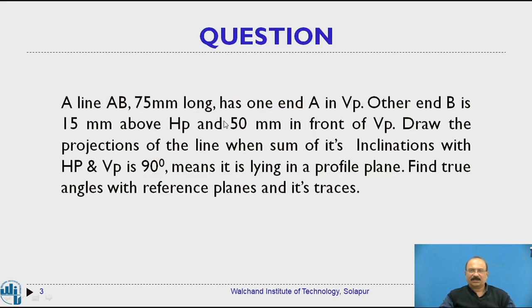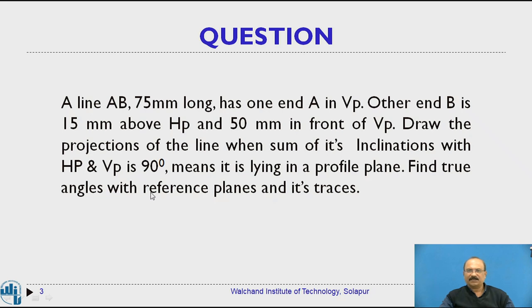So here is the question. A line AB 75 mm long has one end A in VP. The other end B is 15 mm above HP and 50 mm in front of VP. Draw the projection of the line when the sum of its inclinations with HP and VP is 90 degrees — meaning it is lying in the profile plane. Find the true angles with the reference planes and its traces.